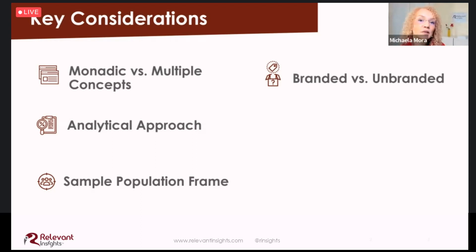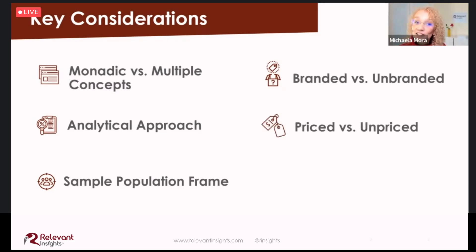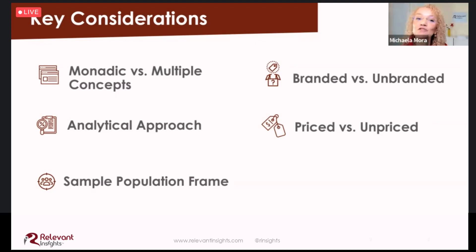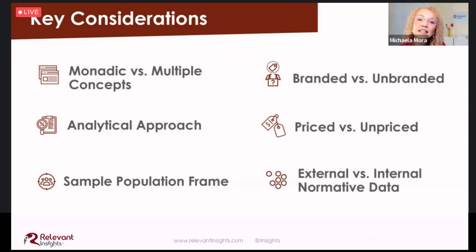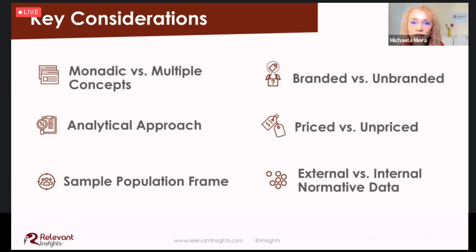Another critical question is whether this should be a branded or unbranded blind study, since branding can impact multiple test metrics. We also need to consider whether to show prices as part of the concept, as people react differently — and sometimes irrationally — when price is presented or absent. Finally, we need decision rules to determine if a concept is successful. We can use internal norms from similar tests the company has done, or external benchmarks from third parties, though external norms are rarely specific enough for your product and brand.